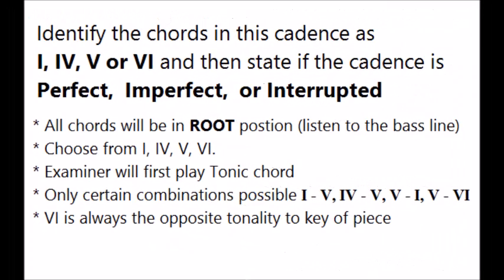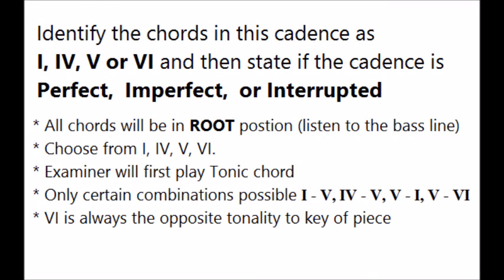Did you notice that the first chord was the same as the key chord given at the beginning? And from there, the only permutation possible at this grade following chord 1 is chord 5. Now try this one. Here is your key chord. [plays chords] That was 5 to 6 — an interrupted cadence.